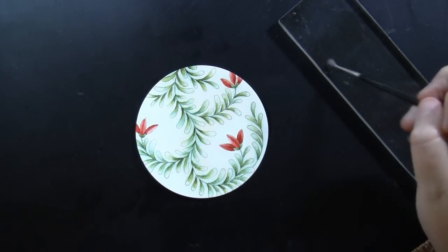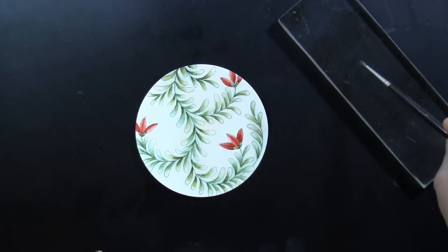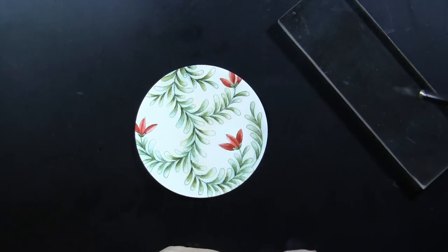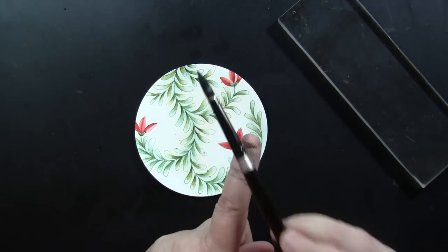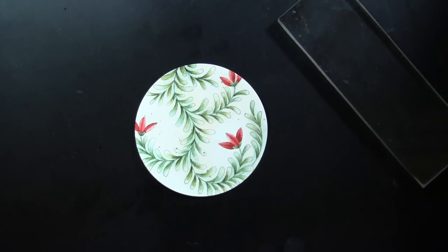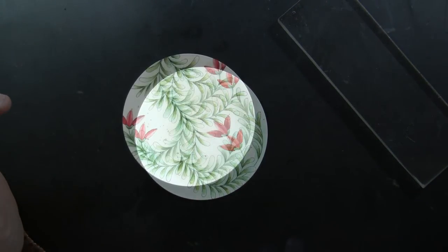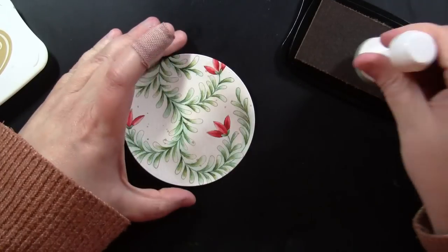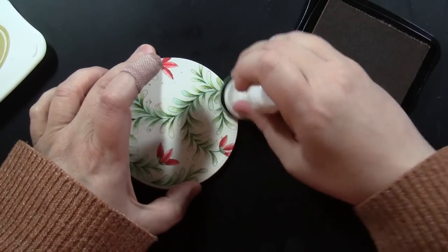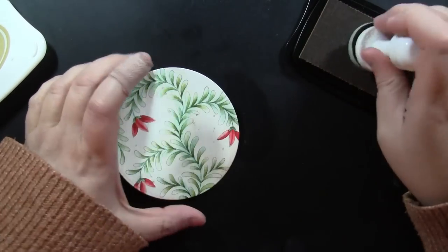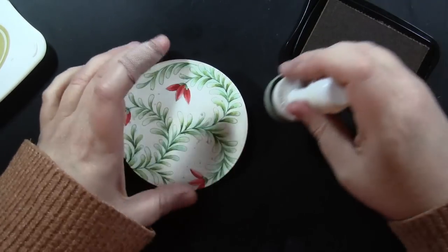Here I just have that Toffee Crunch Memento ink pressed onto the acrylic block, and I am just adding a little bit of a splattering, so mixing it with water and sort of tapping that paintbrush onto my finger to splatter some of that. And then I will also, once this is completely dry, using an ink blending tool and a foam pad, just add a little bit of that Toffee Crunch ink around the outside.